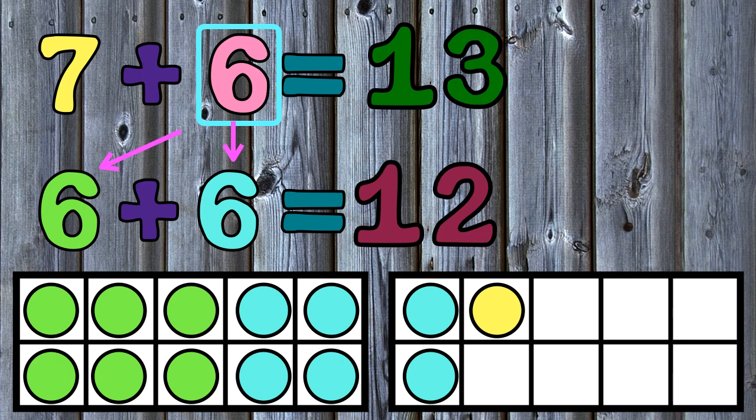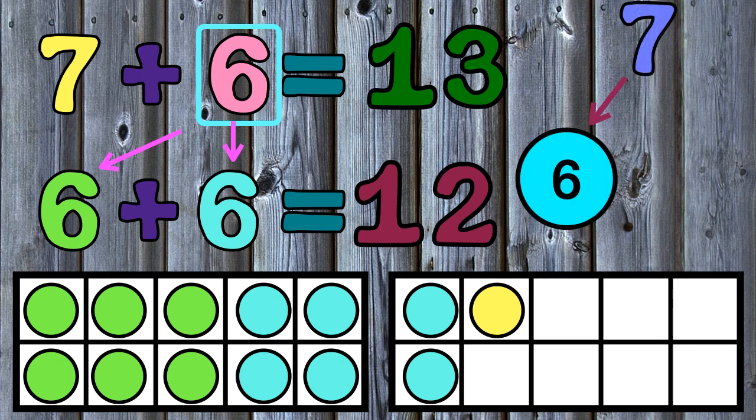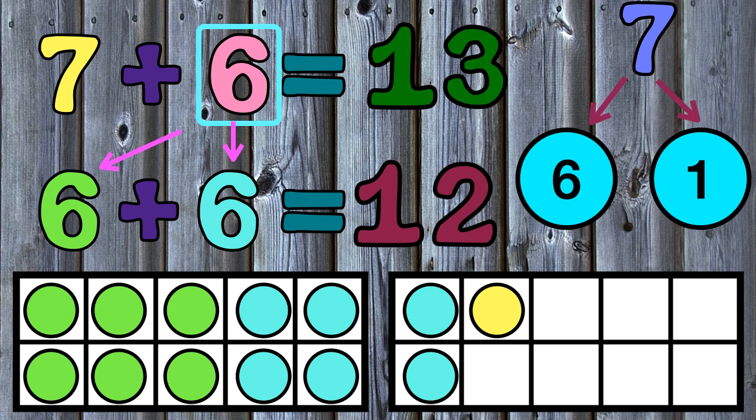You can also see this if I break apart or decompose the number 7. I can decompose it into 6 and 1 because 6 plus 1 equals 7. So you can see that by using a double fact, 6 plus 6 equals 12, I could add one more to get the answer to my problem 7 plus 6 equals 13.